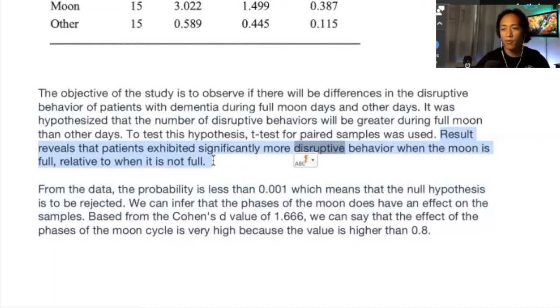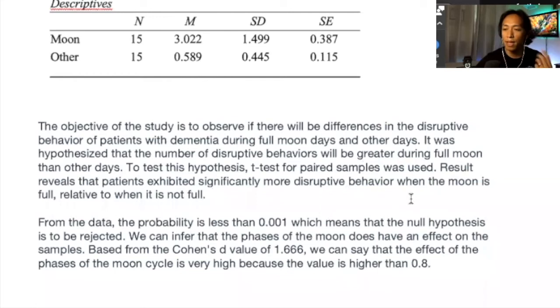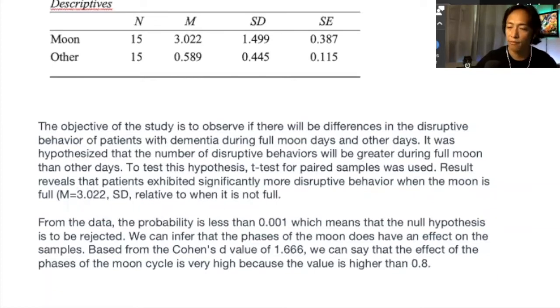Whereas if you say result reveals that patients exhibited significantly more disruptive behavior when the moon is full relative to when the moon is not full, I guess that's more understandable. So see, it's more informative. But you might say that doesn't sound to be very statistical. It's fine because we can simply inject the statistical values. How do we do that? We can inject the descriptives. We say more disruptive behavior. What is our evidence for that? The mean. When the moon is full, we insert our stats. So the mean is 3.022. And then don't forget, every time that you say the mean, you have to say the standard deviation as well. SD of 1.499.